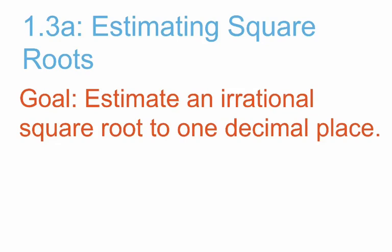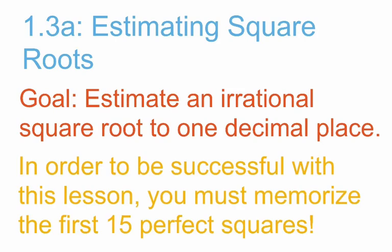Our first lesson for 1.3 is 1.3a on estimating square roots. Our goal for this lesson is to estimate an irrational square root to one decimal place. Now in order to be successful with this lesson, you must have your first 15 perfect squares memorized.